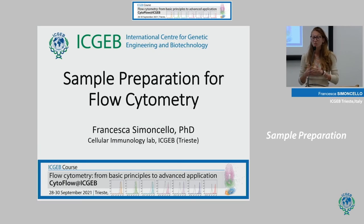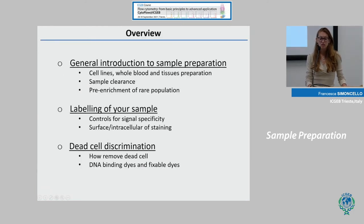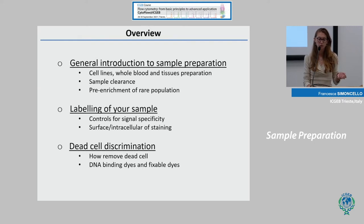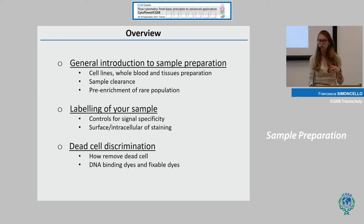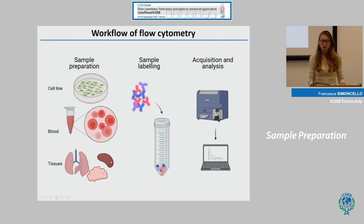Today I will give you some hints about sample preparation for flow cytometry. I will start with a general introduction about sample preparation and give you hints about how to obtain a single cell suspension from cell line, blood, or tissue. I will also give hints about how to improve sample clearance, the importance of enrichment of a population, labeling of your sample, controls for staining specificity, and dead cell discrimination.